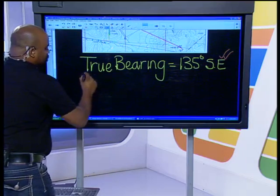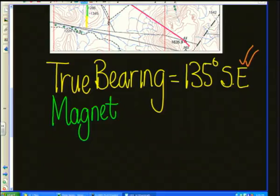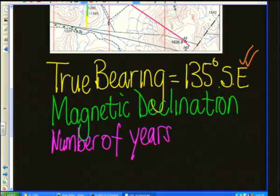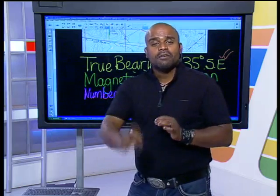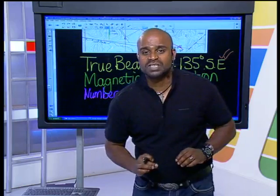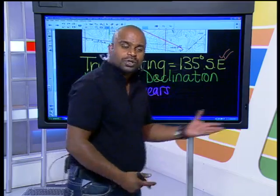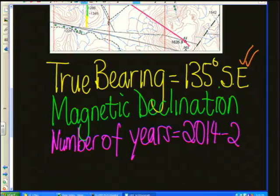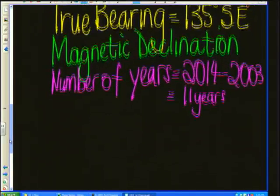Follow the following steps and you will get an accurate answer. My first step is to calculate the number of years. The question said calculate the magnetic bearing for the present year, which is 2014. The year on the map was 2003. To calculate the number of years, I take the present year, 2014, and subtract the year on the map, 2003. When subtracted, my answer is 11 years — that's the difference in years.